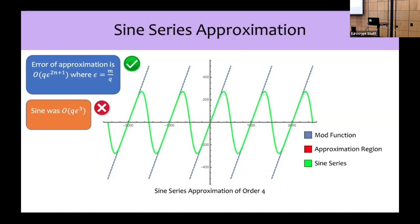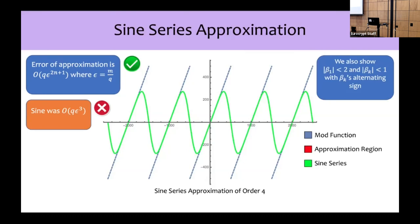In contrast, approximating the mod function by just sine had an inherent cubic error that could not be made arbitrarily small. Furthermore, we also prove that the coefficients β_k of the sine series are all small: in particular, the first one is less than 2, all the others are less than 1, and they alternate in sign. Because the β_k's are small and the Taylor series approximation of sin(kx) has small coefficients, the resulting polynomial obtained from our sine series approximation also has small coefficients as desired.